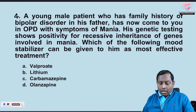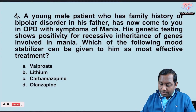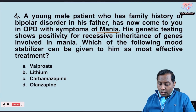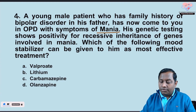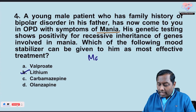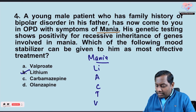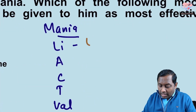Next: a young male patient with a family history of bipolar disorder — his father — comes to OPD with symptoms of mania. His genetic test is positive for a recessive gene involving mania. Which of the following mood stabilizers can be given as the most effective treatment? The drug of choice for mania is lithium. Remember the mnemonic: lithium acts well.